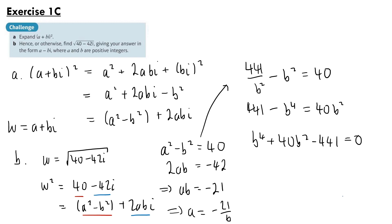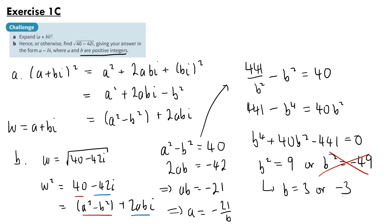Solving this as a hidden quadratic, we get b squared equals 9 or b squared equals minus 49. Since b is a positive real integer we eliminate minus 49. So b equals 3 or minus 3, but since the answer must be in the form a minus bi where b is positive, we must choose b equals minus 3. Substituting back into a equals minus 21 over b gives a equals minus 21 over minus 3, which is 7. So our answer is 7 minus 3i.